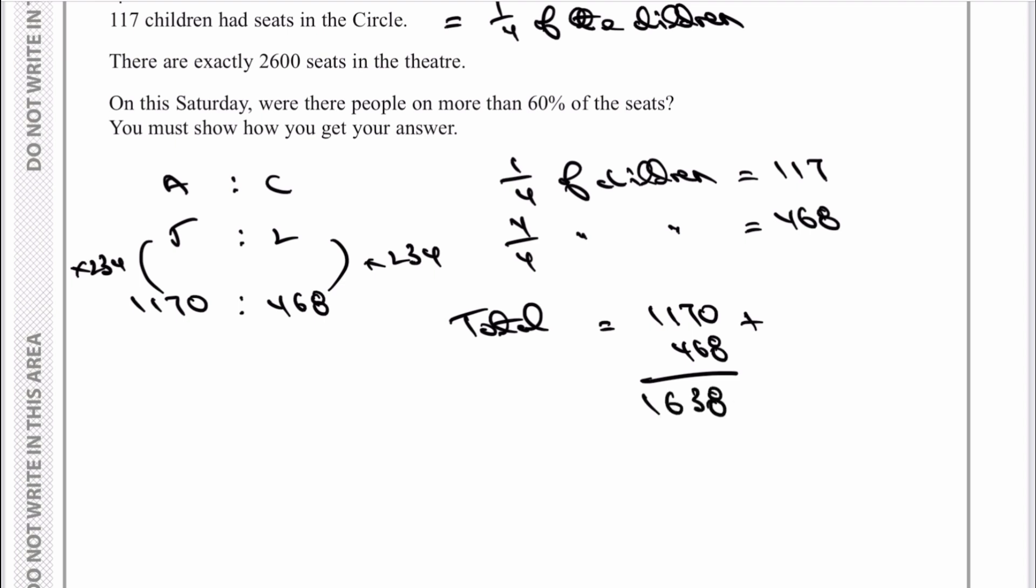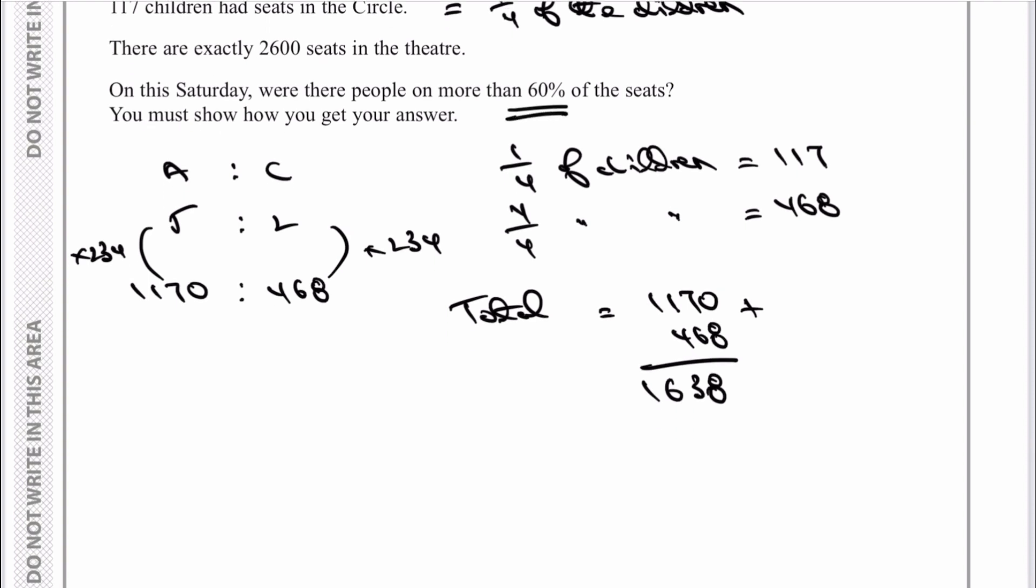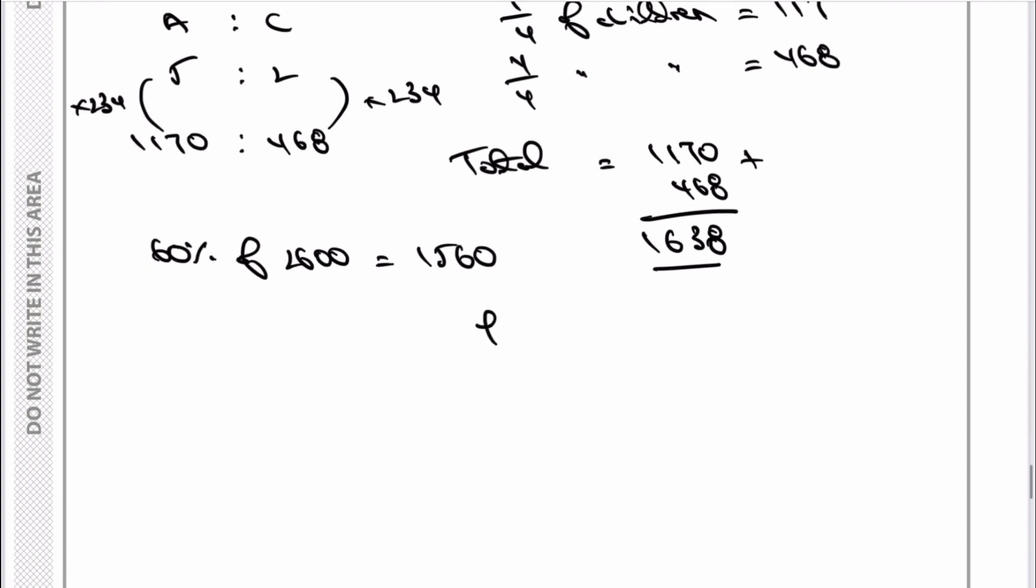The question is: were there more than 60% of the seats filled? There are actually 2600 seats. Well, 60% of 2600 = 1560. However, there are actually 1638 seats filled, so therefore the answer is yes, more than 60%. You could work it out as a percentage if you wanted, 1638 out of 2600, which is about 63%, but it doesn't really matter as long as you show the comparison.